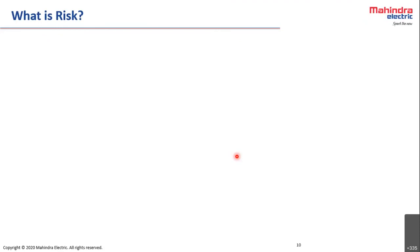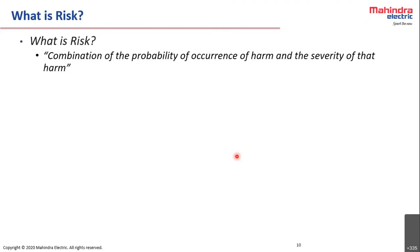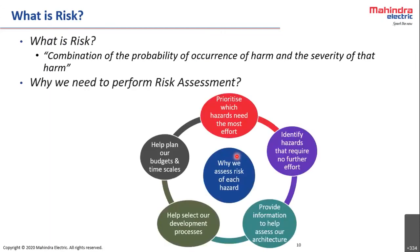Risk is a combination of the probability of occurrence of harm and the severity of the harm, as defined by ISO. We perform risk assessment to prioritize which hazards need the most effort. ASIL ratings range from ASIL A to ASIL D, where ASIL D is the most stringent and ASIL A is the least stringent. We need to determine how much development effort each hazard demands.